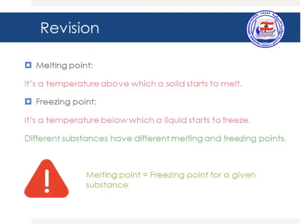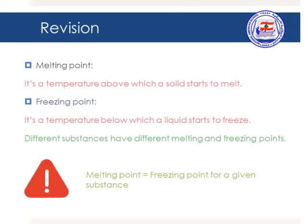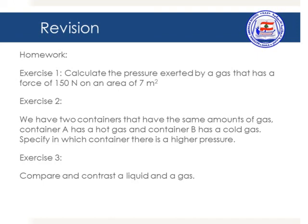The melting and freezing points are temperatures that are equal to each other. The melting point is the temperature above which a solid starts to melt, while the freezing point is the temperature below which a liquid starts to freeze. Different substances have different melting and freezing points, so you can never find two different substances with the same melting point. Finally, please copy exercises 1, 2, and 3 on your copybook and try to solve them as homework for next time.